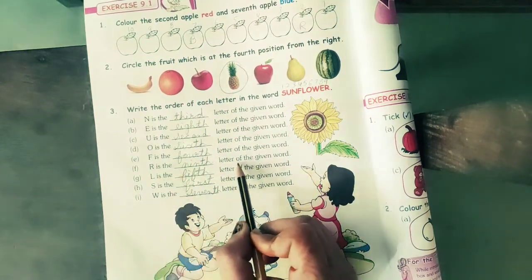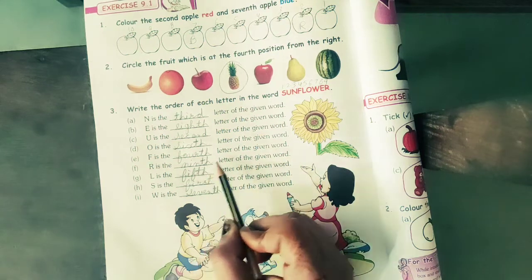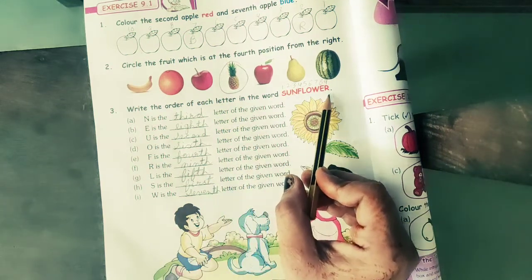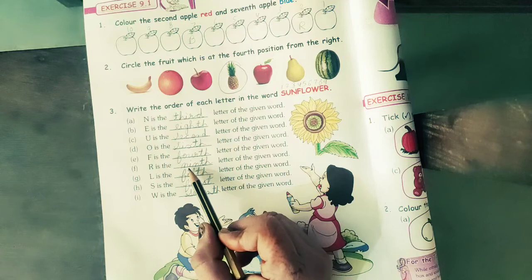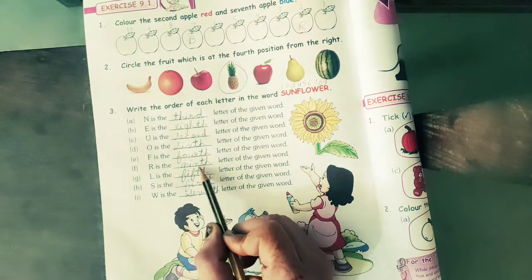R is the letter of the given word. R is at which number position? Ninth. The spelling of nine you know: N, I, N, T, H, ninth.